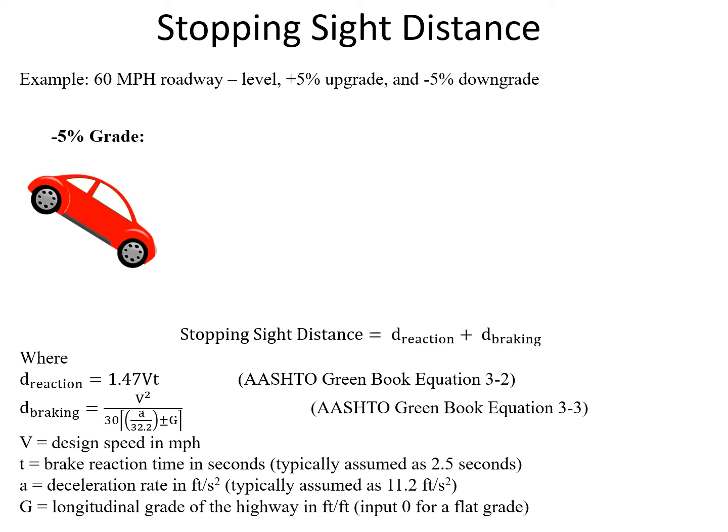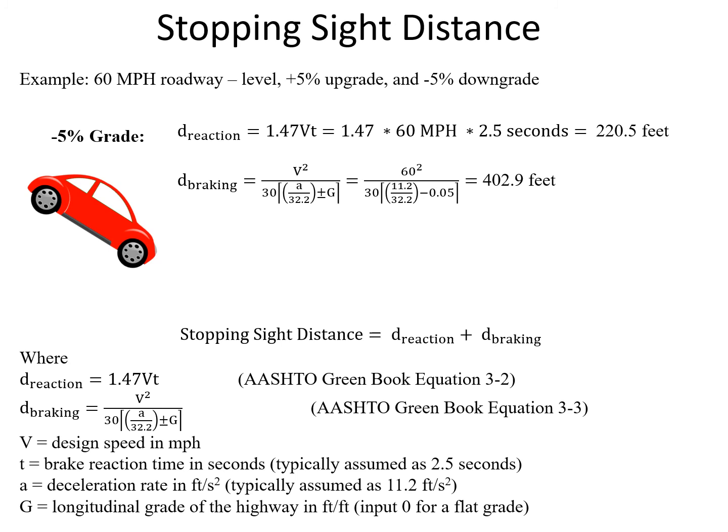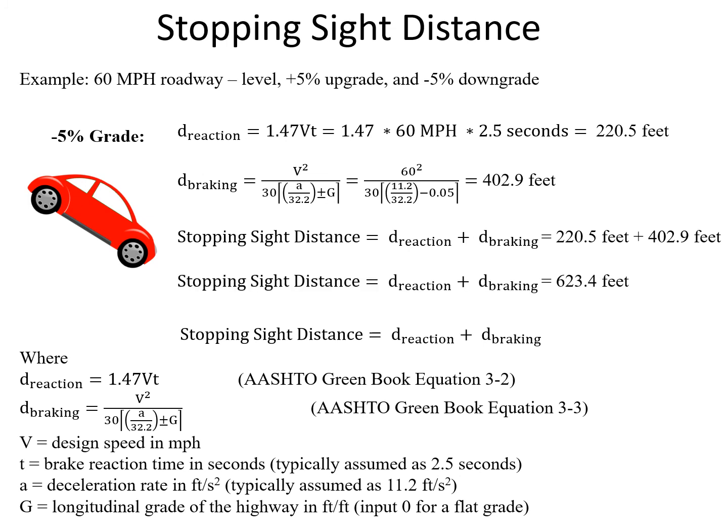Moving to the 5% downgrade, the reaction distance again doesn't change — still 220.5 feet — but our braking distance will change. Now in the denominator we subtract 0.05, so our braking distance increases to 402.9 feet. Adding those two terms together gives a stopping sight distance of 623.4 feet. This is larger than both the level and upgrade conditions because with a downgrade, gravity causes us to need a longer distance to complete the braking maneuver.